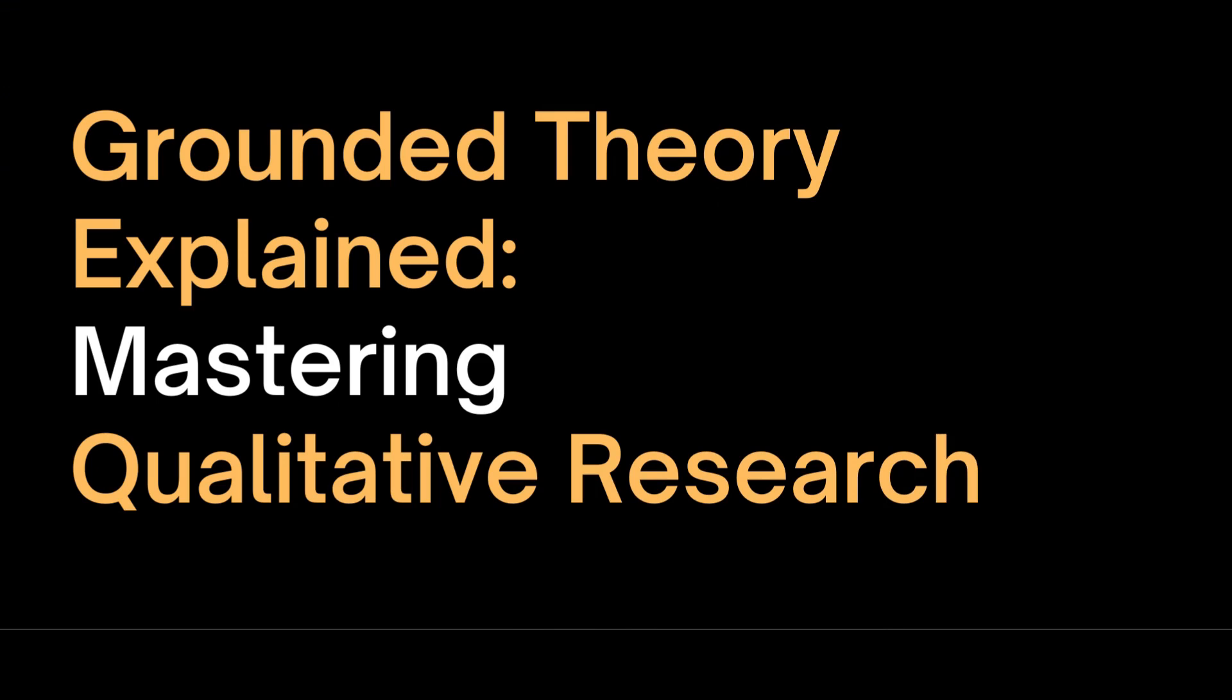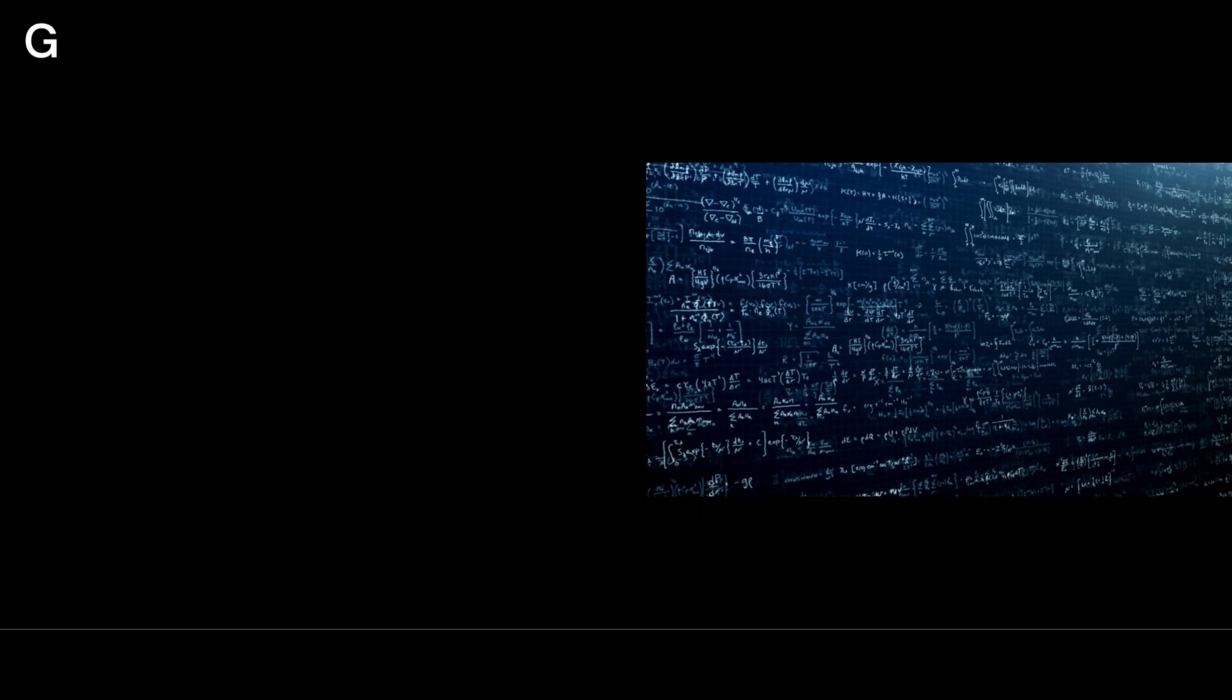There are three very important steps in grounded theory: coding, memo writing and theoretical sampling. The grounded theory method is more appropriate when little is known about a phenomena. One of the main aims of the grounded theory is to generate theory that is grounded in the data.